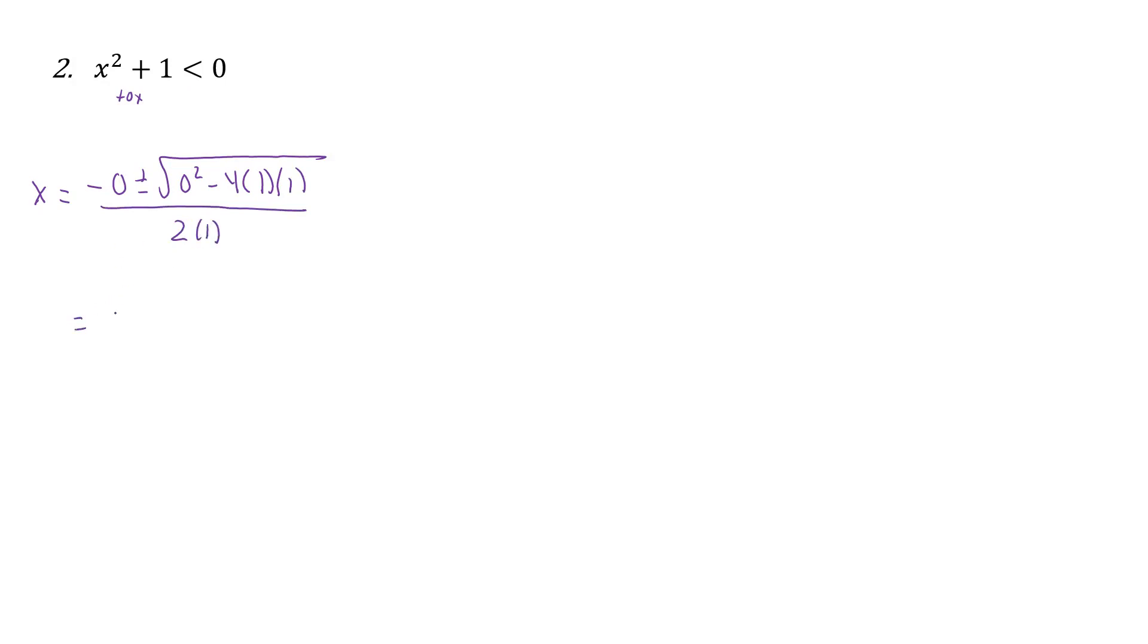Alright, well, that 0 is gone. So then I just have plus or minus the square root of minus 4, and then over 2. Now, the square root of negative 4, well, that's going to give me plus or minus 2i, because we can take the square root of a negative. We know i's now. And so all over 2, so that's equal to plus or minus i.